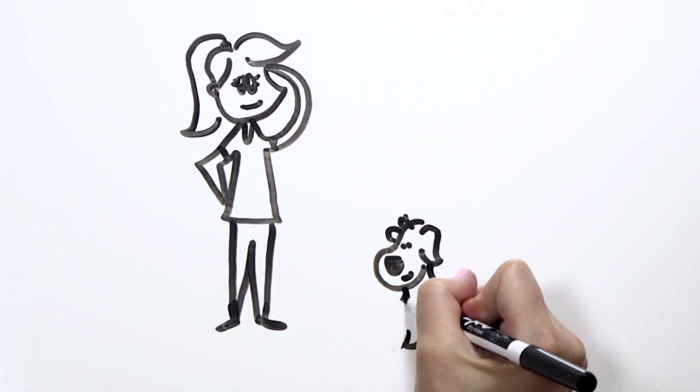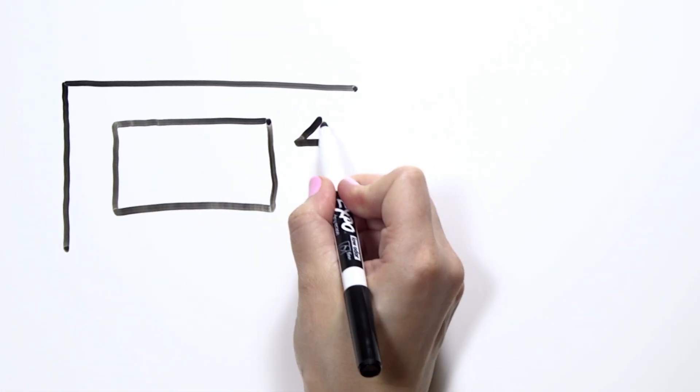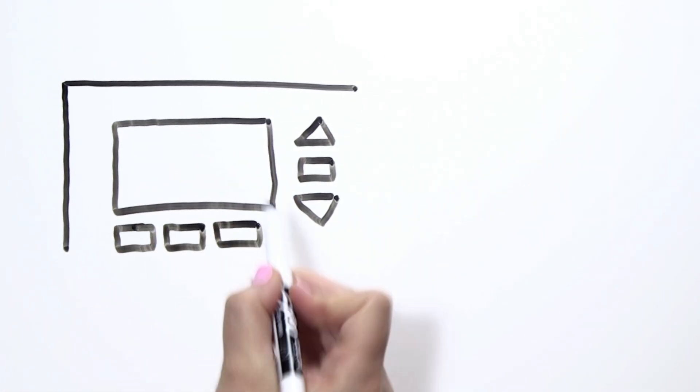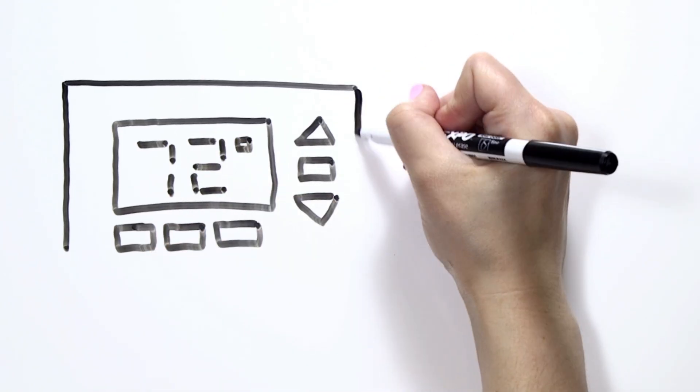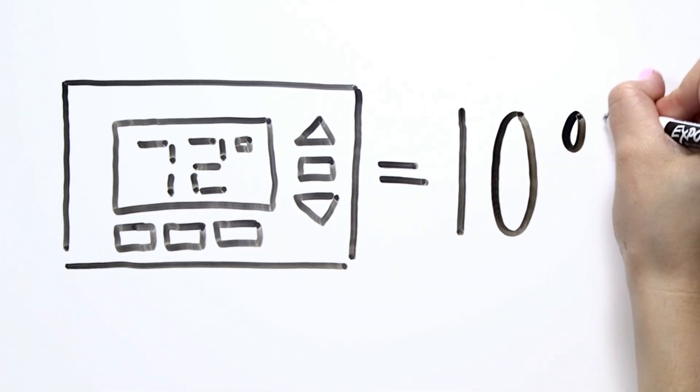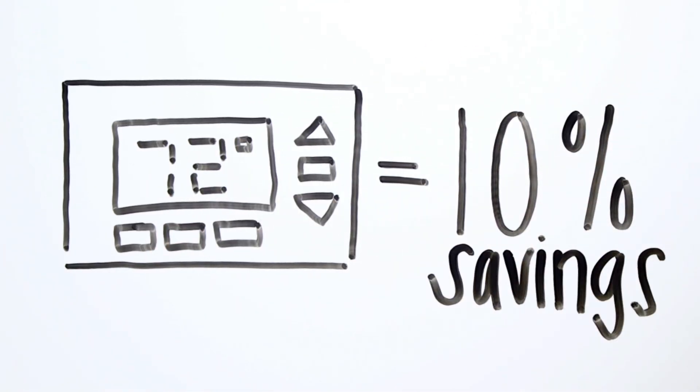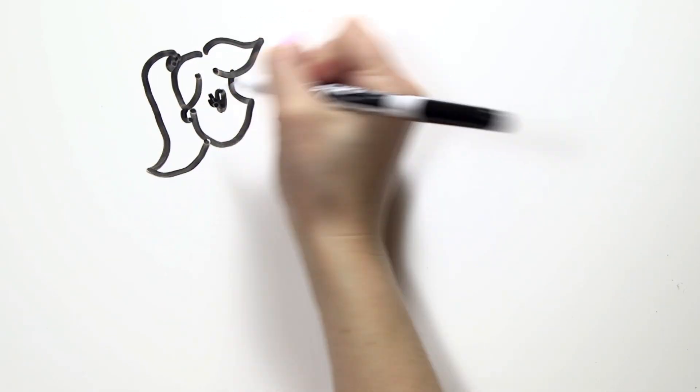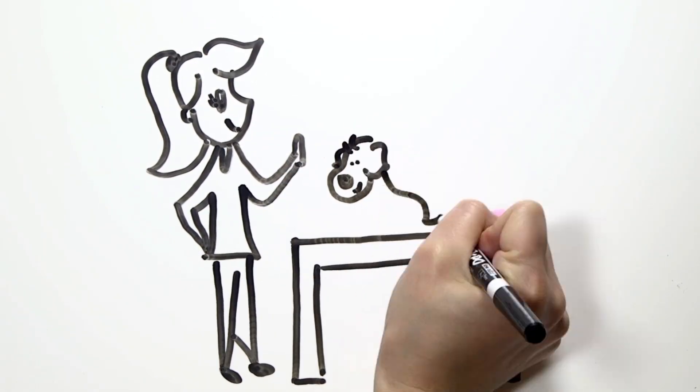Interested in saving energy and money but not sure where to start? Your thermostat is a great place to begin. By adjusting your thermostat 7 to 10 degrees from its normal setting for eight hours a day, you can save up to 10% a year on your energy bill. That's approximately $83 a year. Score!